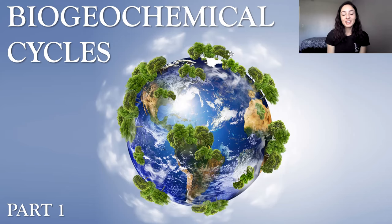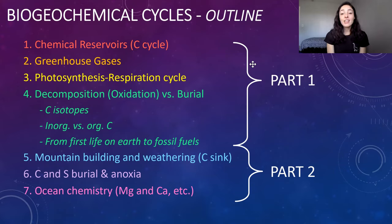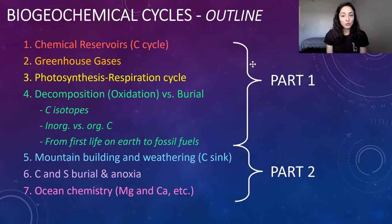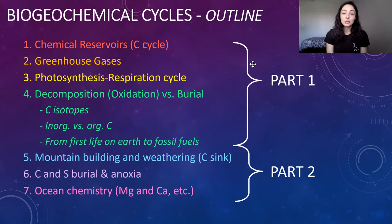Hi guys, today we're going to be talking about biogeochemical cycles. Specifically, we're going to be going over the major biogeochemical cycles, and then I'll talk about chemical reservoirs using the carbon cycle as a major example, and then greenhouse gases, photosynthesis and respiration, decomposition or oxidation versus burial, and then we'll talk about carbon isotopes to track carbon burial through time, as well as the difference between carbon isotopes in inorganic versus organic carbon. And to end today, we'll talk a little bit about the amazing diversity of the tool of carbon isotopes and what they can allow us to determine about Earth's past as well as Earth's future.